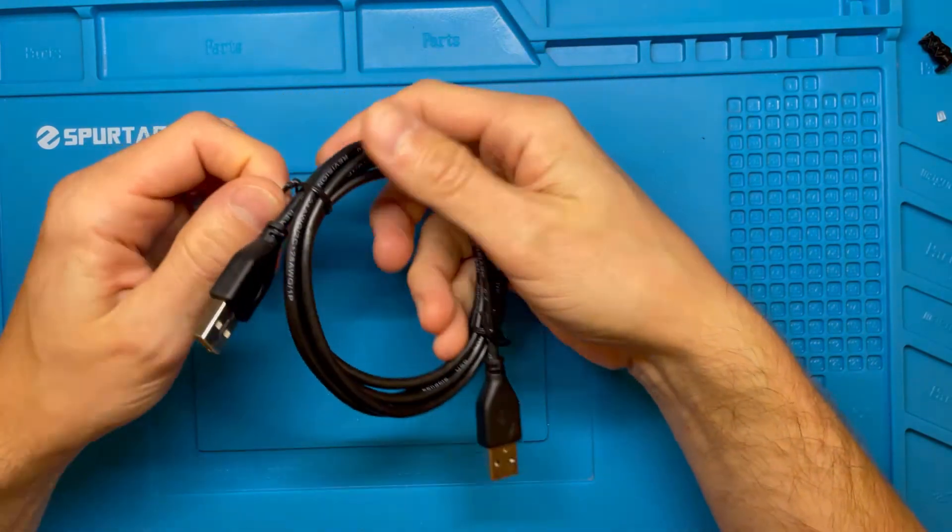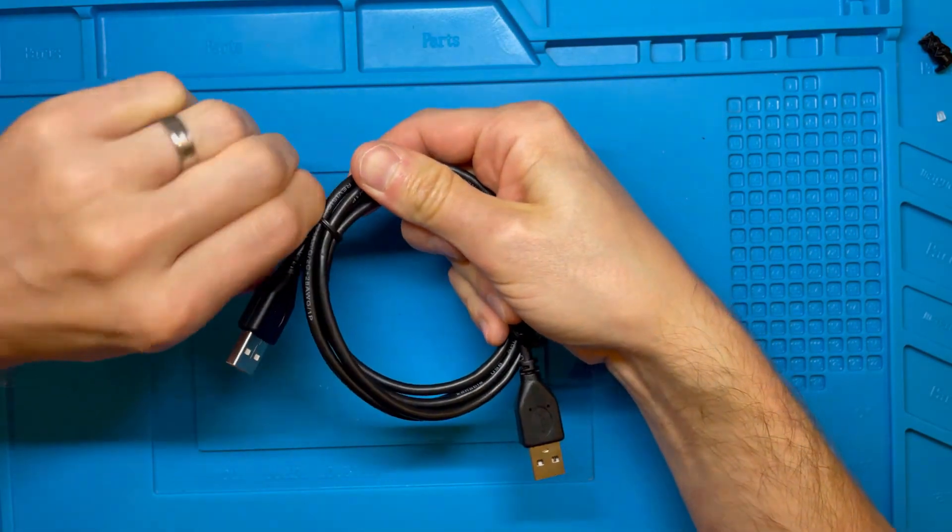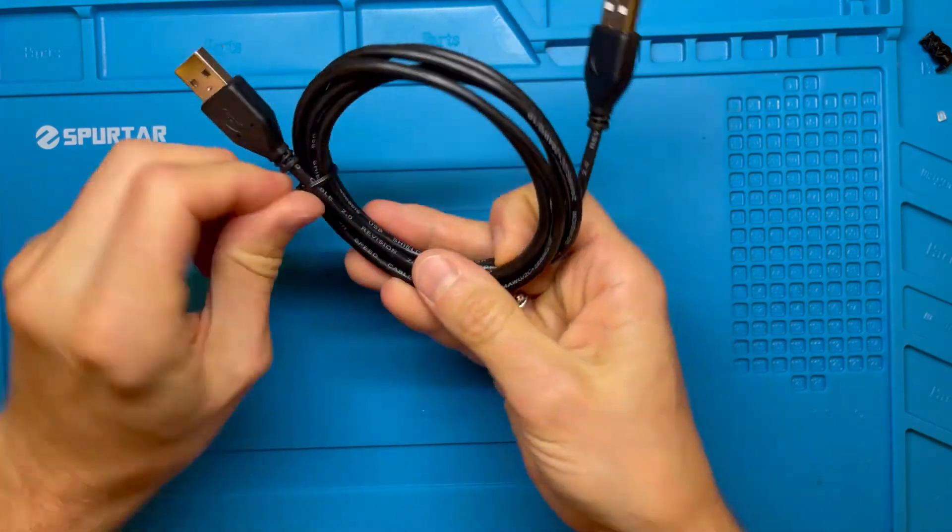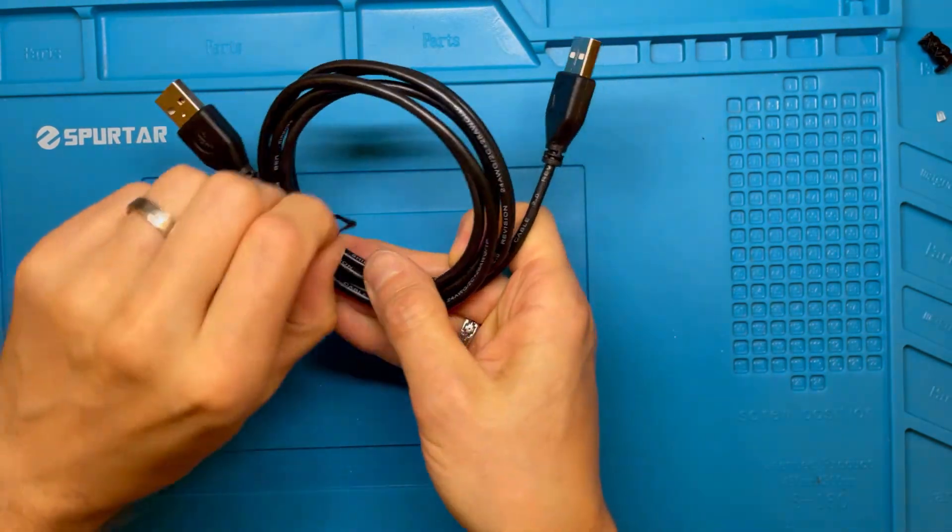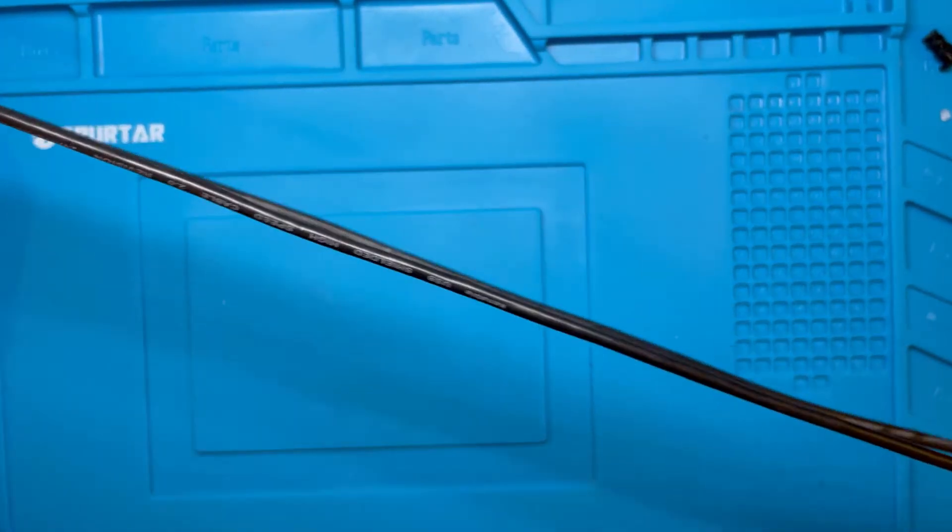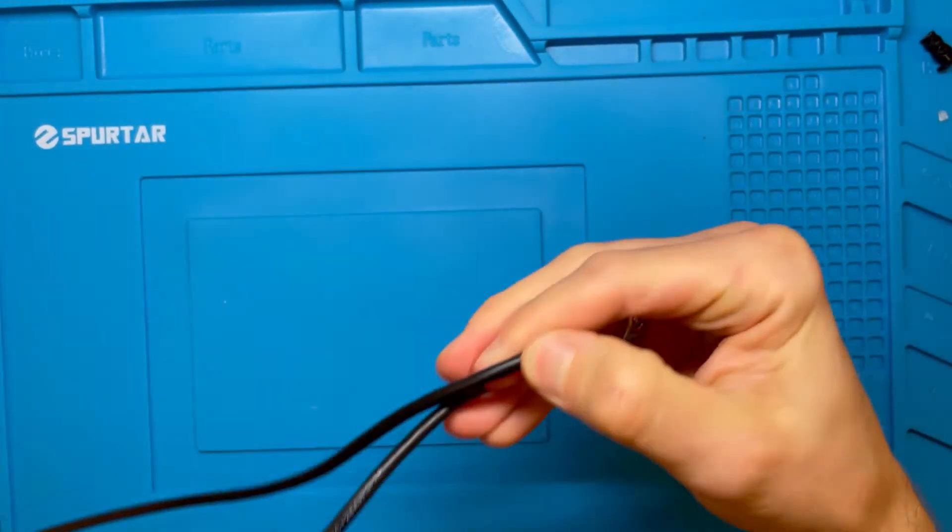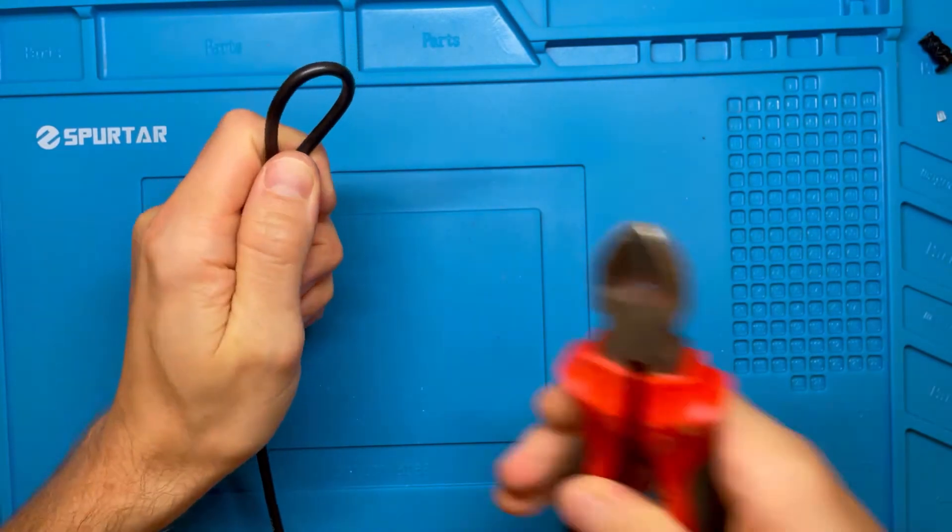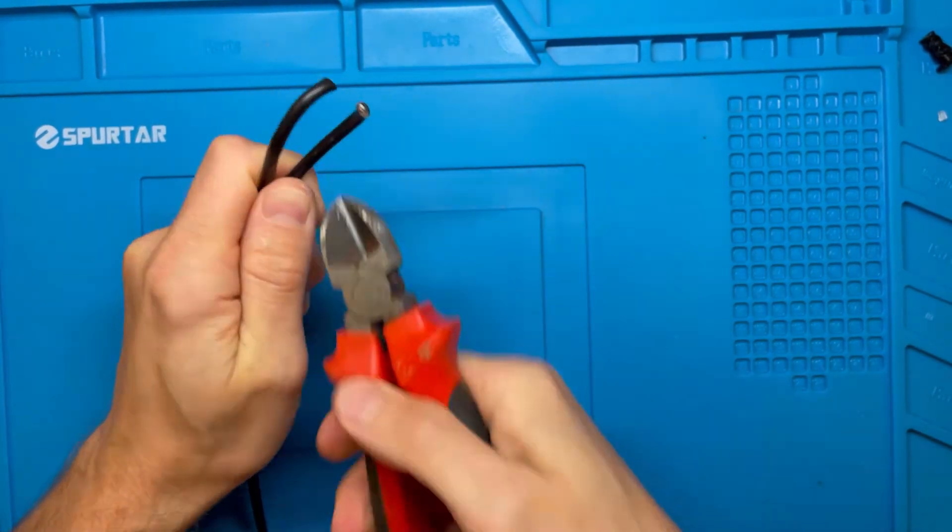So we start off with the USB cable itself. First thing we have to do is untie it and we hold onto these ties, we use them later. What I do is I use one of these cables, it's about a meter and a half long and I use it to make two boards. So I cut that off.